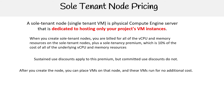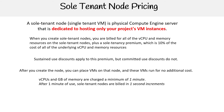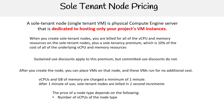After you create the node, you can place VMs on that node and those VMs run for no additional costs. vCPUs and gigabytes of memory are charged a minimum of one minute. After one minute of use, sole tenant nodes are billed in one-second increments. The price of a node type depends on the number of vCPUs, gigabytes of memory, and the region where you create the nodes.